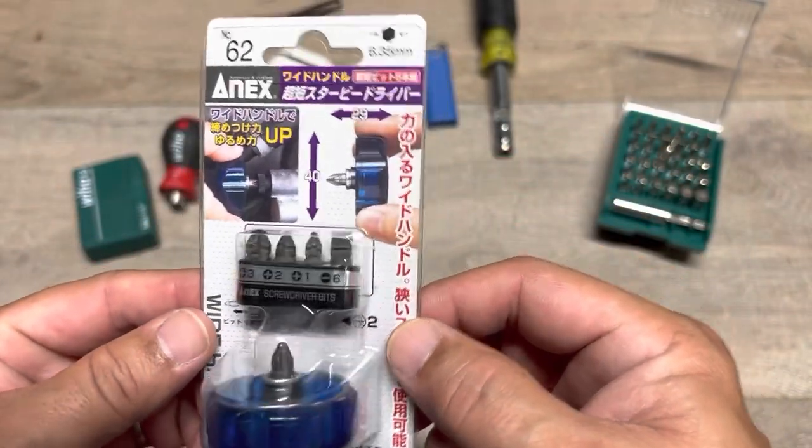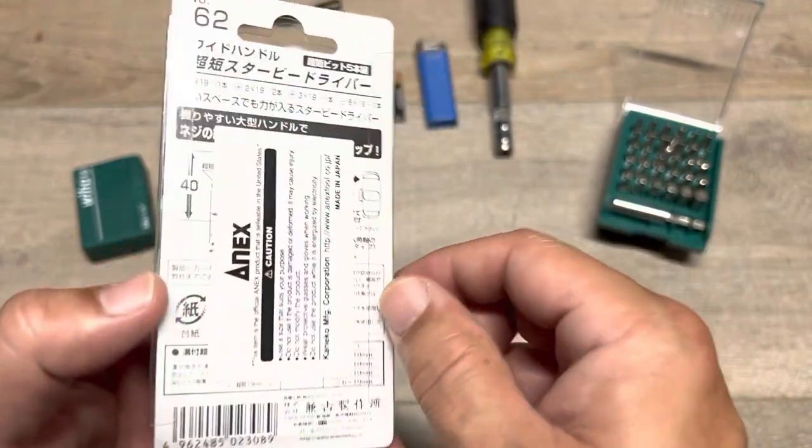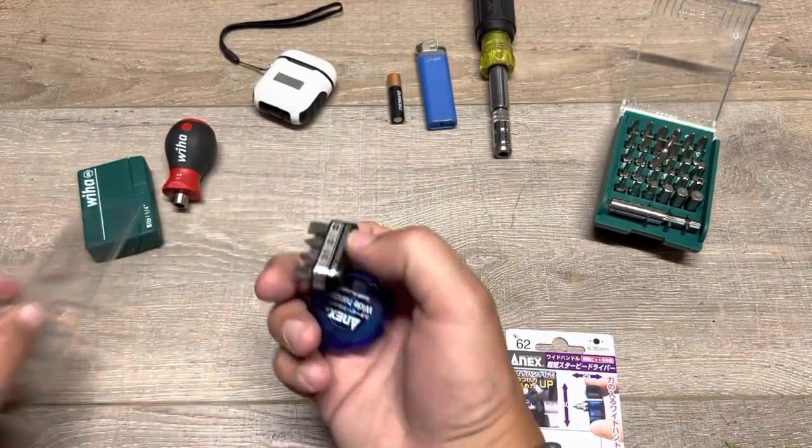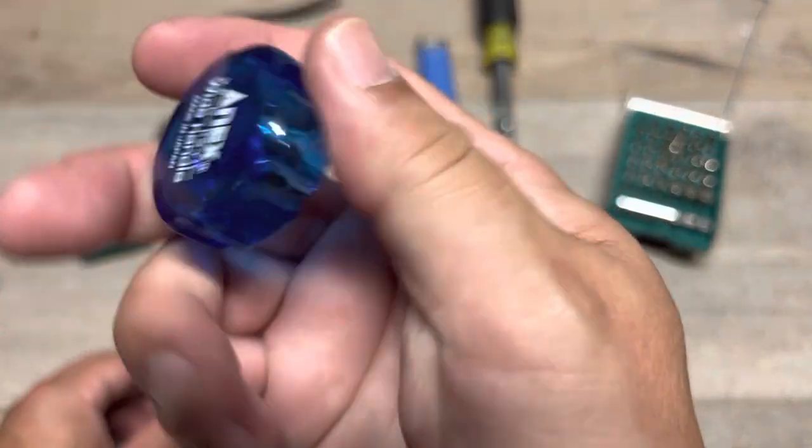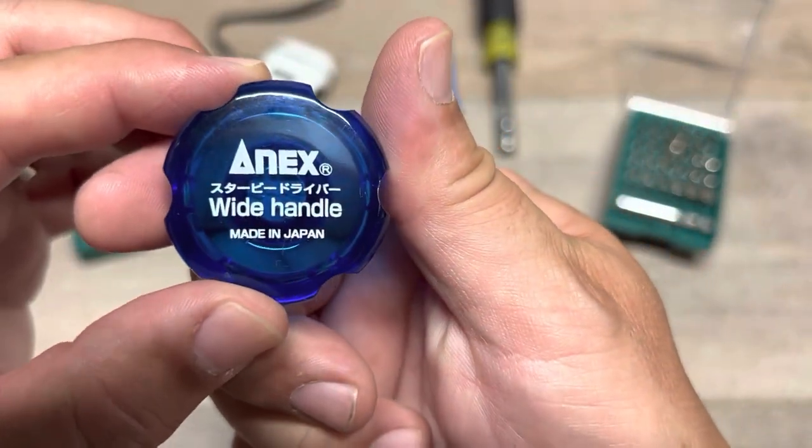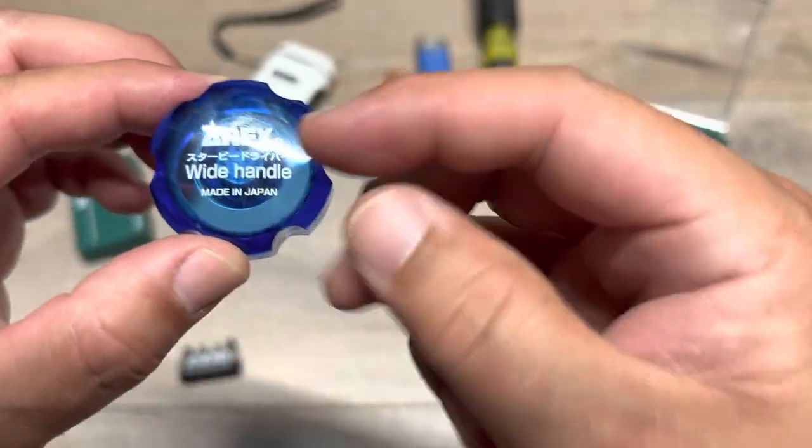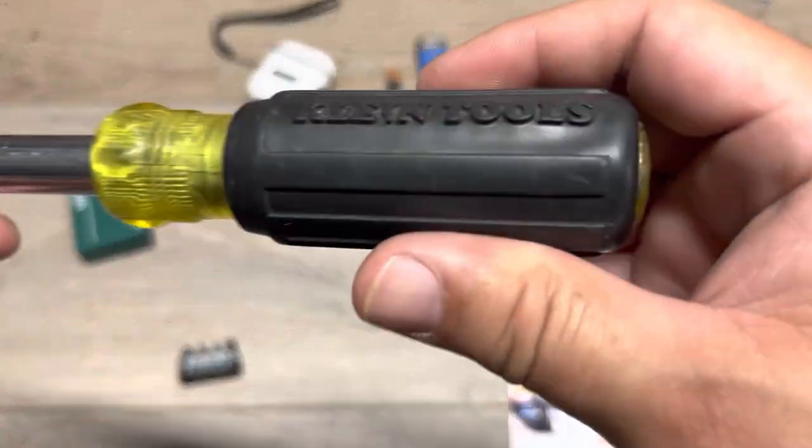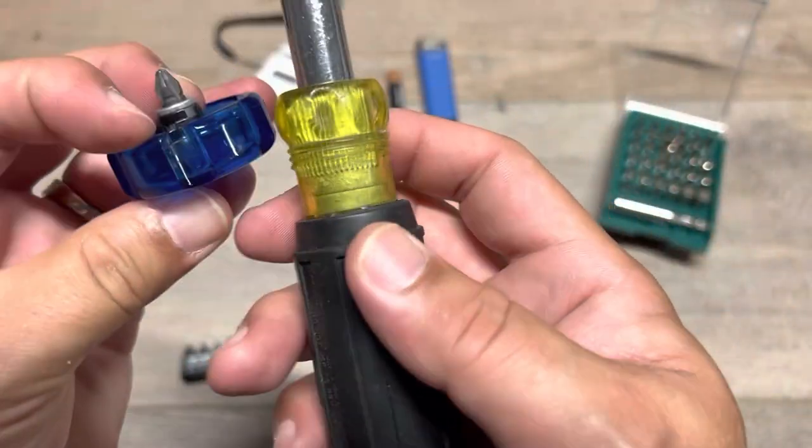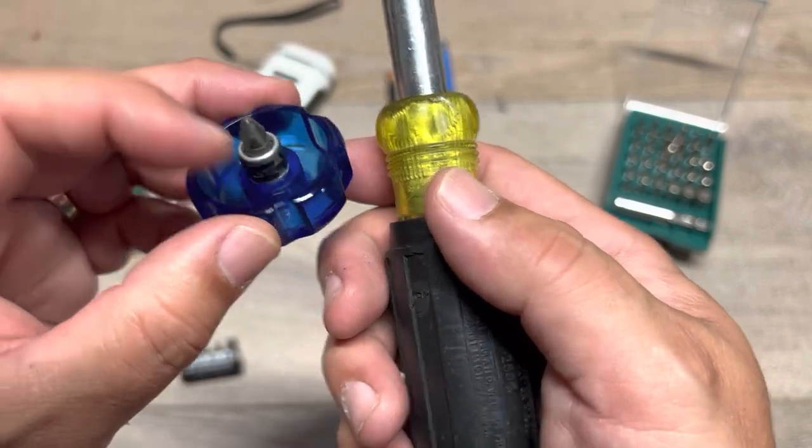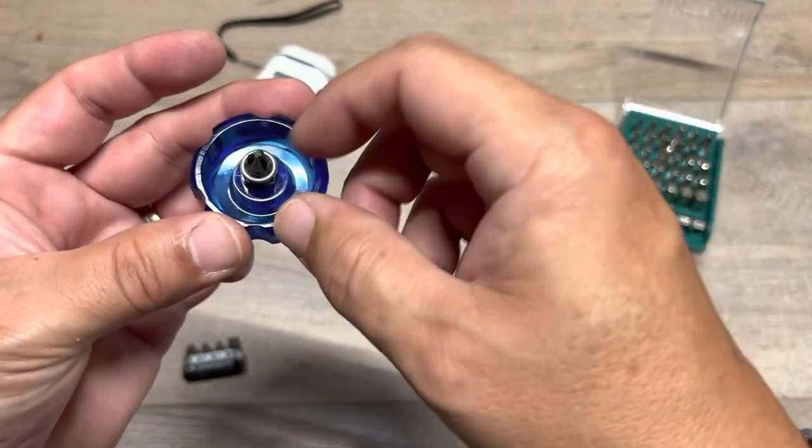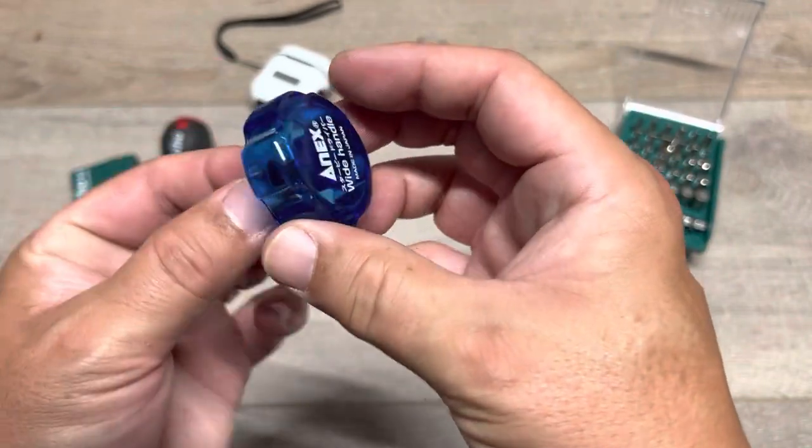There's always that screw and you can't get into it with a normal stubby. You have to remove a whole bunch of things just to get to that one screw. So I think that this was developed for that reason. But I think you could use this on a day-to-day basis. I'm going to have a demonstration soon. But let's crack this bad boy open.